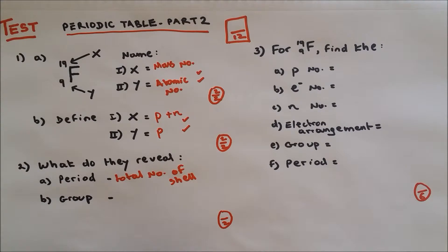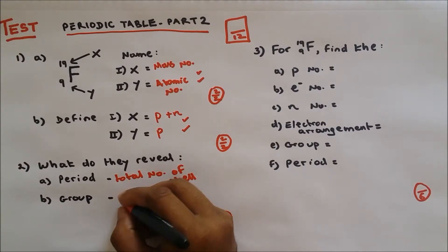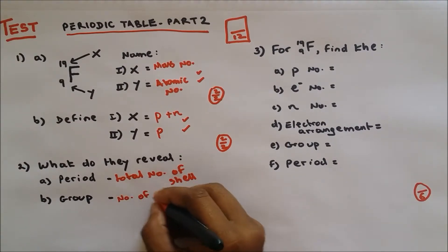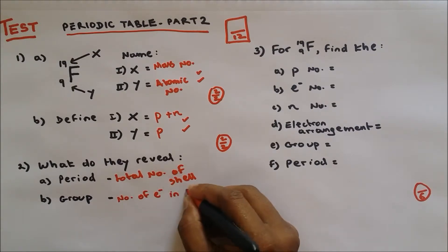Question number two part b, group. What does the group tell us? It's the number of electrons in the outer shell. Two marks, two out of two.